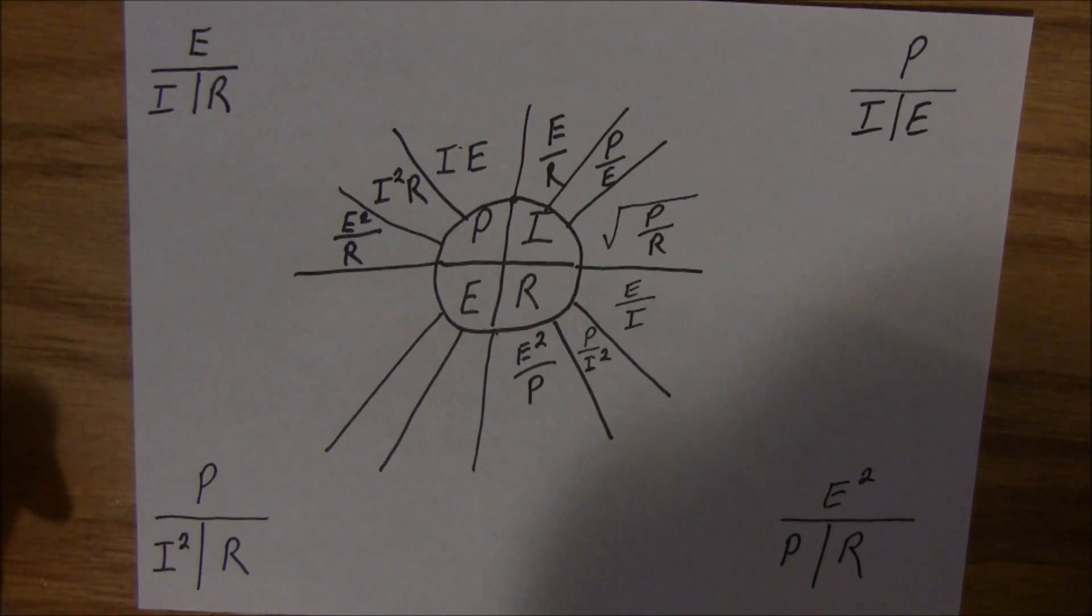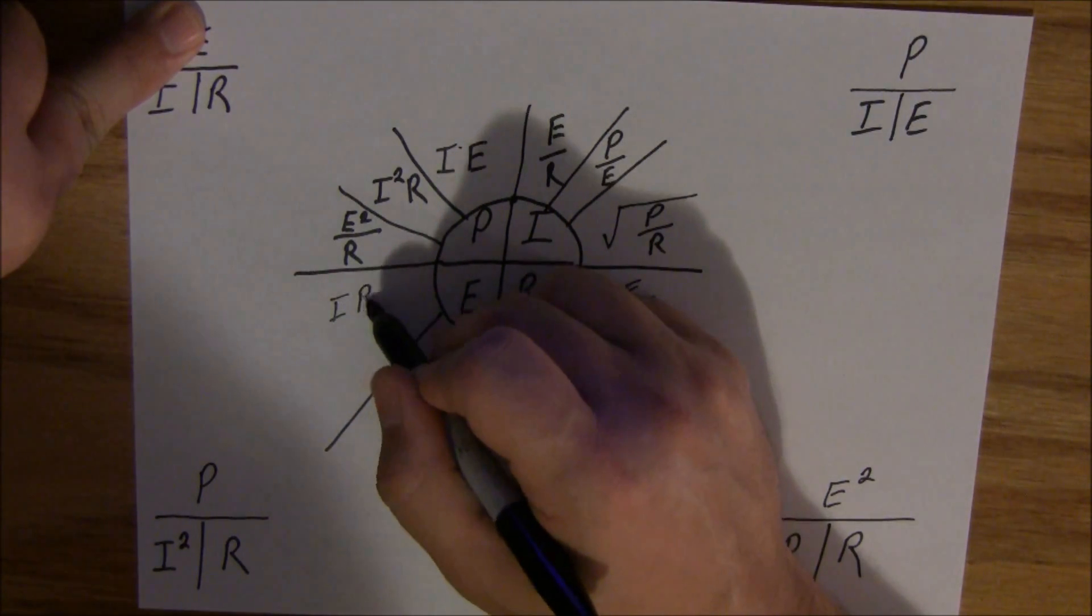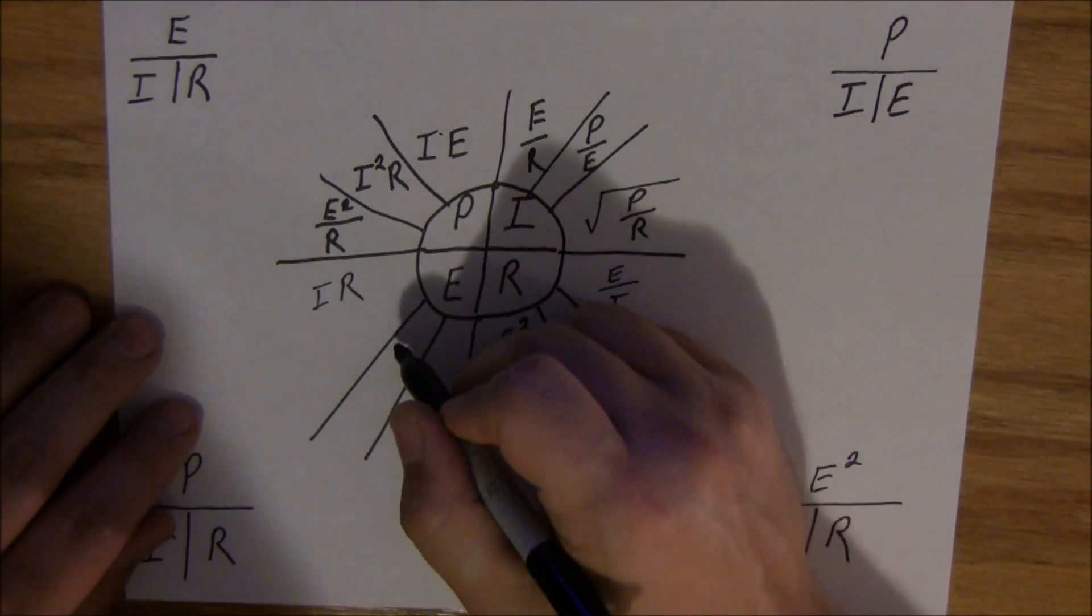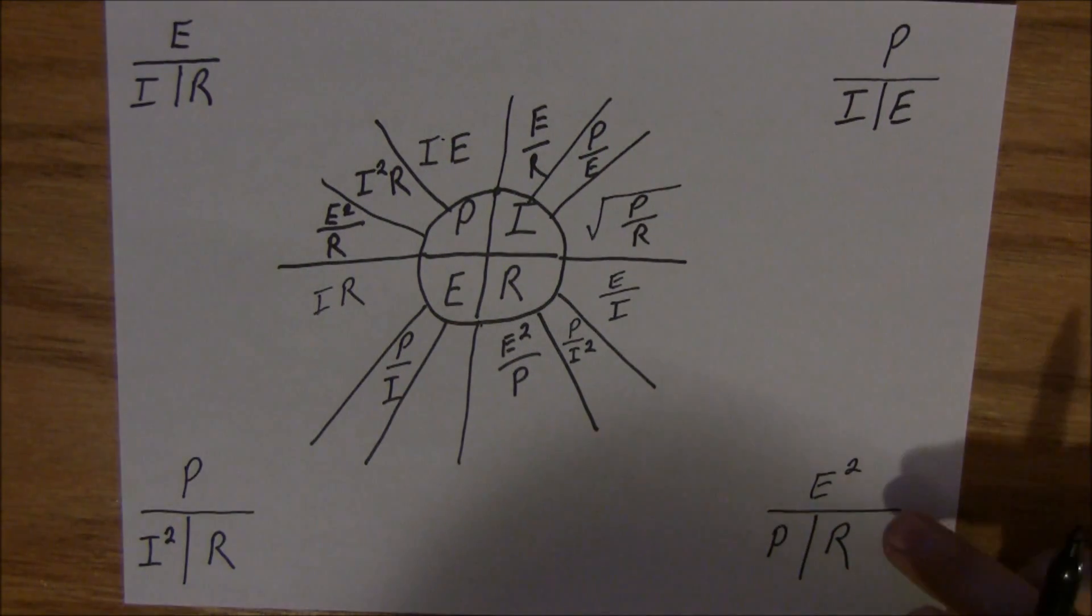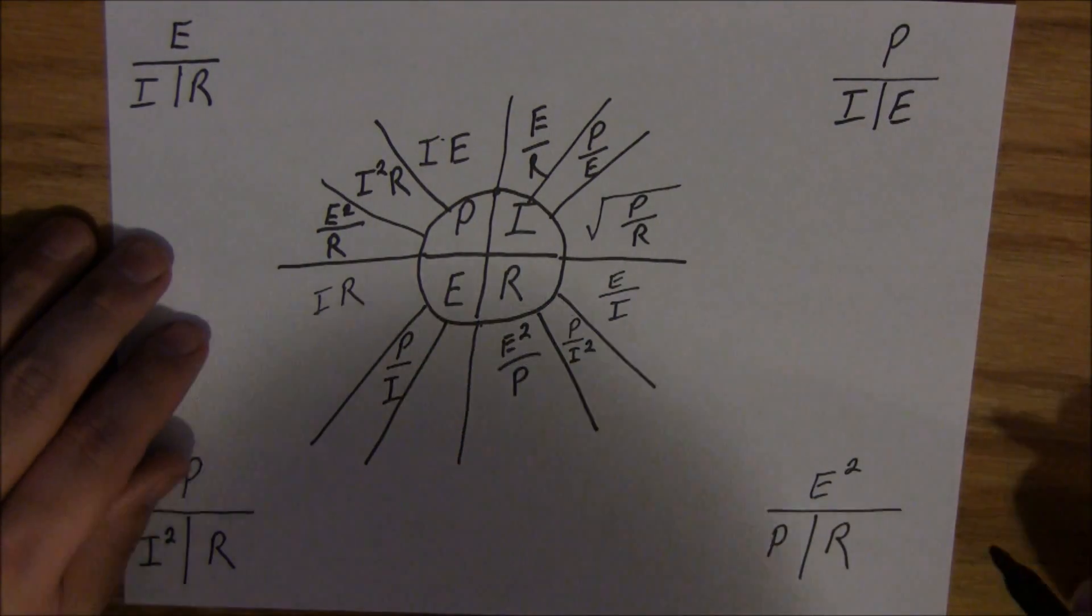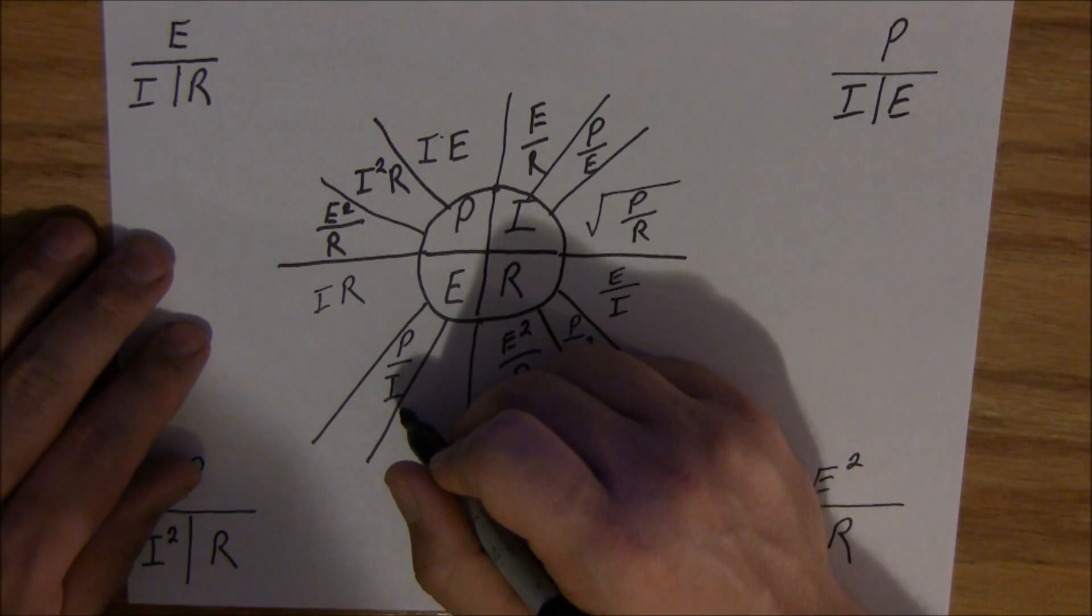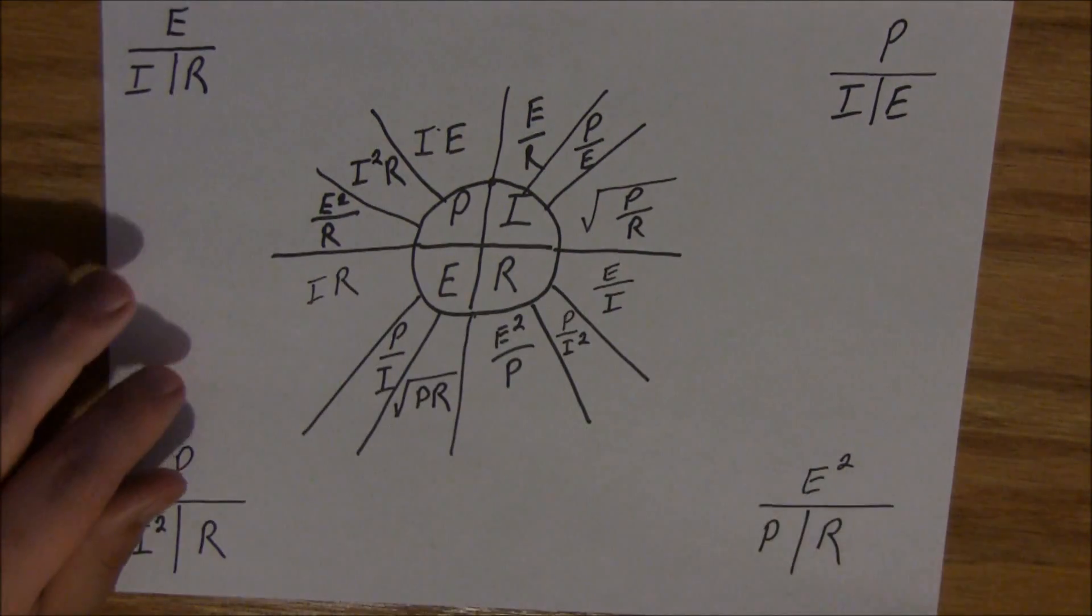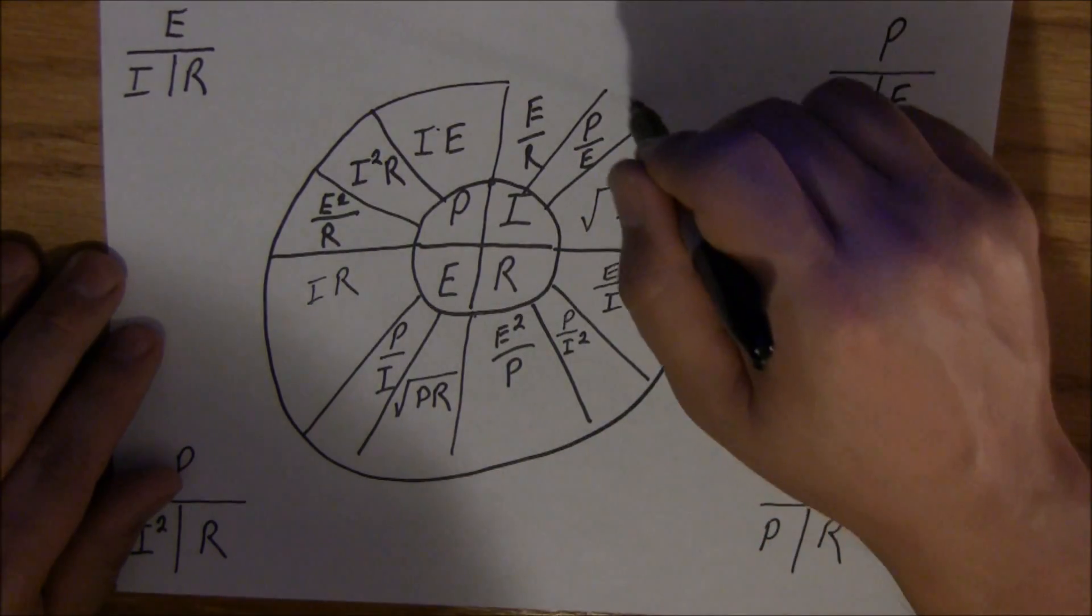That leaves us with voltage. You cover your E up. You've now got I times R. Cover your E up on this one. You got P divided by I. And you cover your E up here. But this is an E squared. So keep that in mind. E squared equals P times R. Which, what you do on one side of the equals, you have to do on the other side. So that is going to be the square root of P times R. And there, now you've got the full wheel.